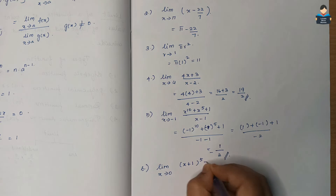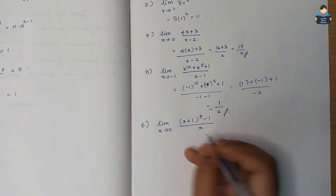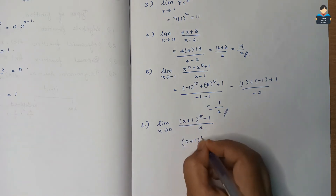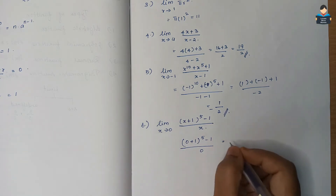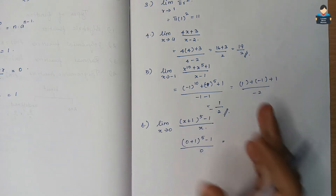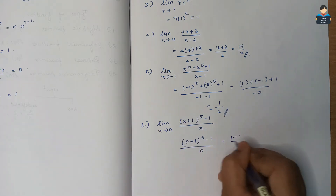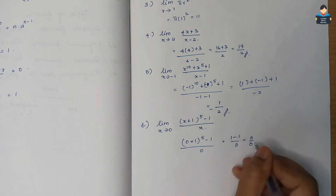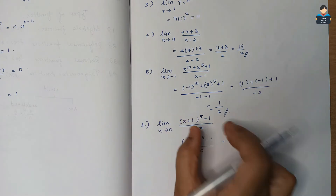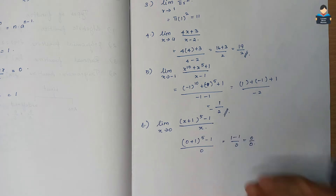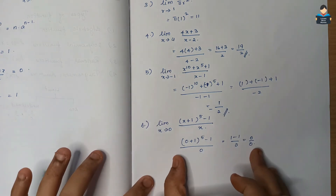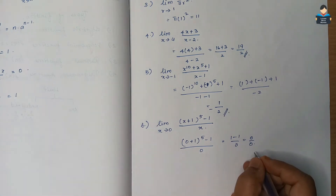Sixth question: limit x tends to 0 of (x+1)^5 minus 1, divided by x. Substituting x = 0 gives (0+1)^5 - 1 over 0, which is 1 - 1 over 0 = 0/0 form. Since this is indeterminate, we need to apply a formula or simplify.